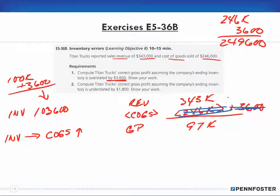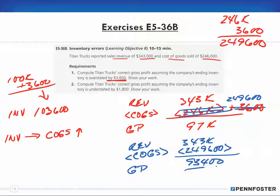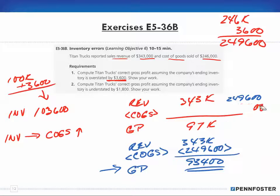So my corrected cost of goods sold should be $249,600. That means my corrected gross profit is: revenue of $343,000 less cost of goods sold of $249,600, which gives me a corrected gross profit of $93,400. That's the corrected gross profit for part number one.